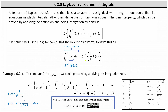For our first example we'll use this second equation to determine an inverse Laplace transform. We're asked to compute the inverse Laplace transform of one divided by the product of s and the quantity s² + 1. We begin by writing it as the inverse Laplace transform of one divided by s times one divided by (s² + 1). In this form, F(s) equals one divided by (s² + 1).